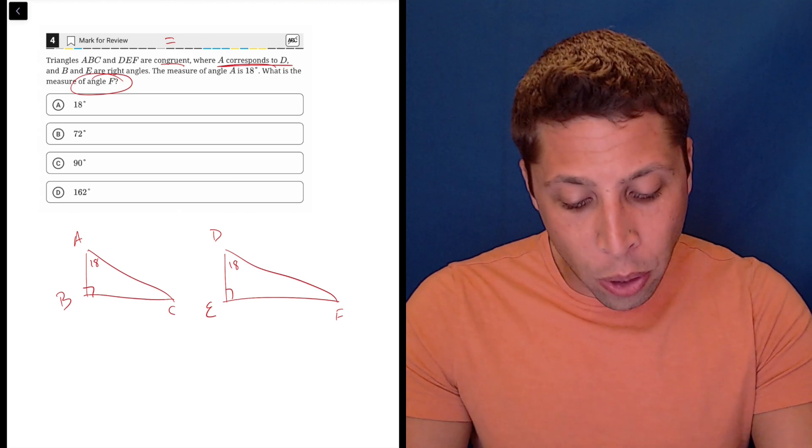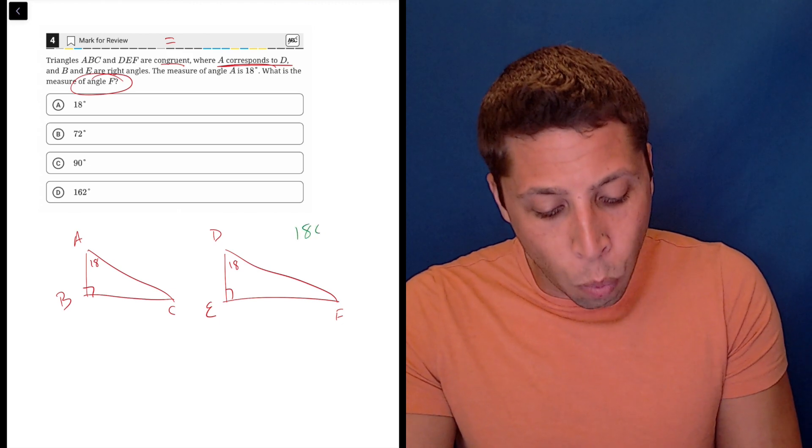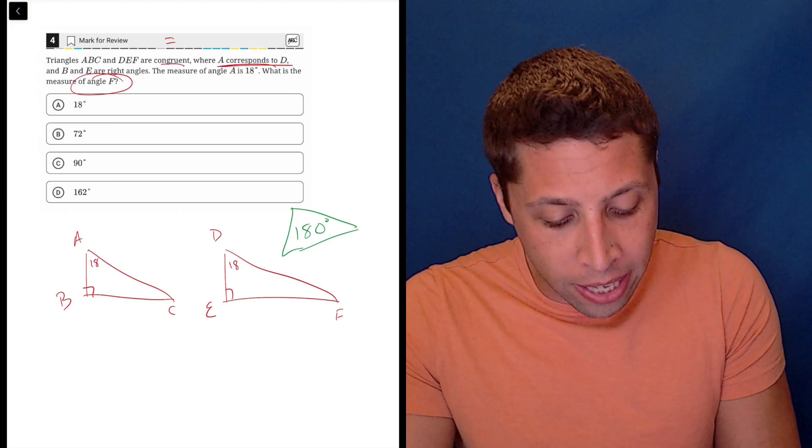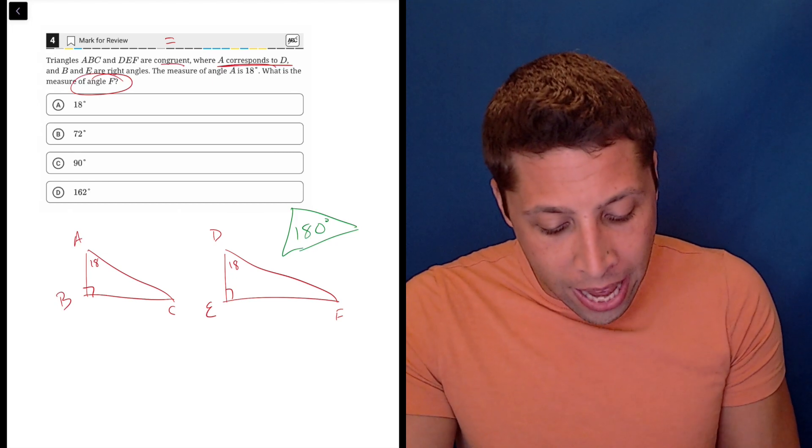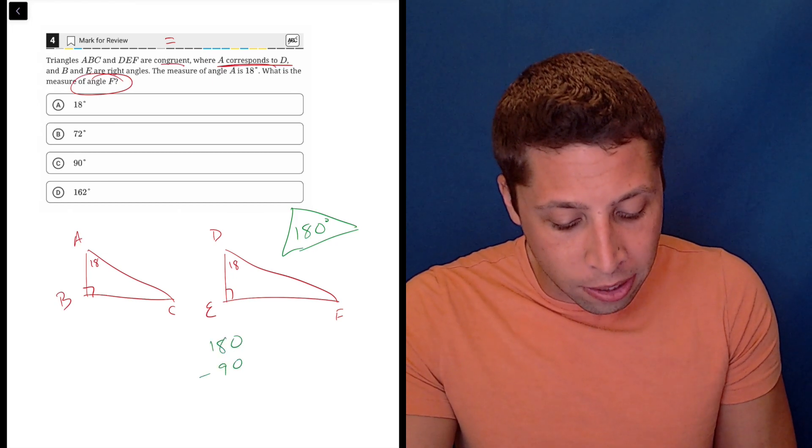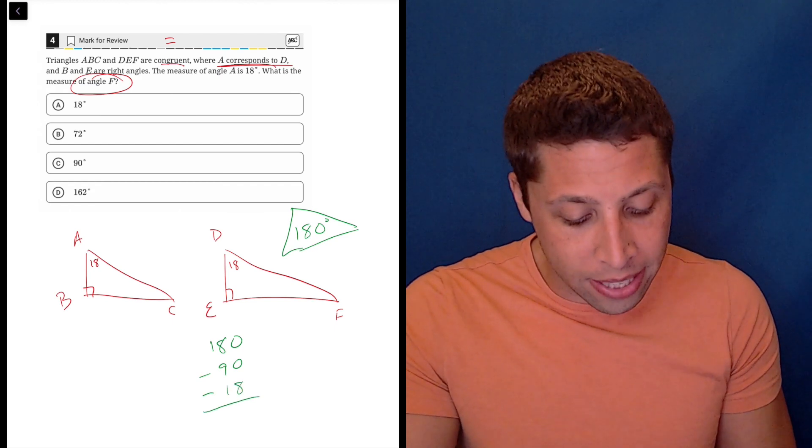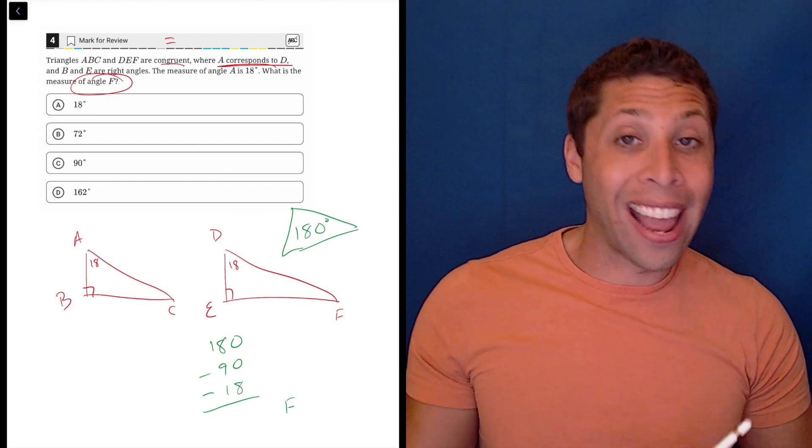And that's going to help us solve for what we really want, which is angle F, because we hopefully know that there are 180 degrees in a triangle. We've got 18 and 90. So we just take our 180, subtract the 90, subtract 18, and whatever we're left with is angle F.